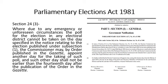Section 24-3 provides that where, due to any emergency or unforeseen situations, the poll for election in an electoral district cannot be taken on the date specified in the notice — that is, the date specified in the proclamation also — the Commission, by order published in the Gazette, shall appoint another day for the taking of such poll.